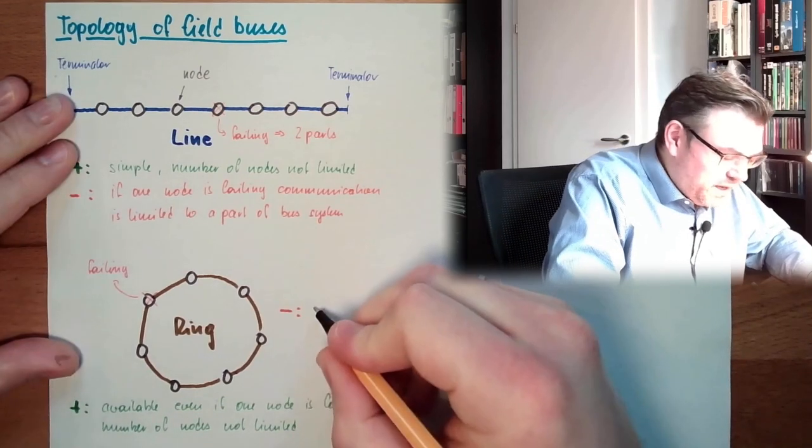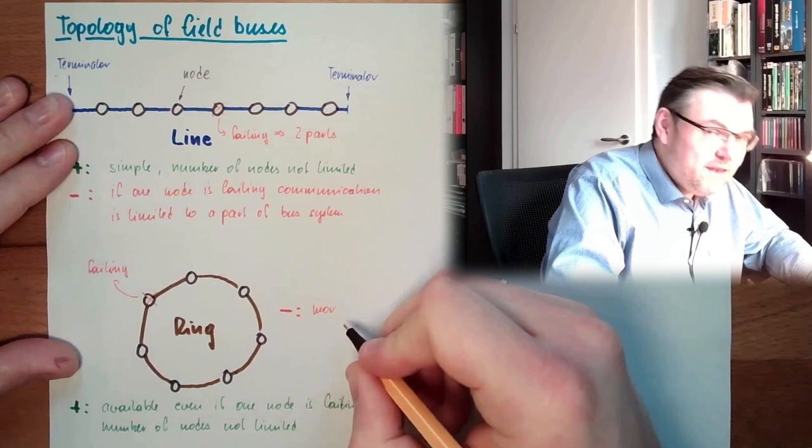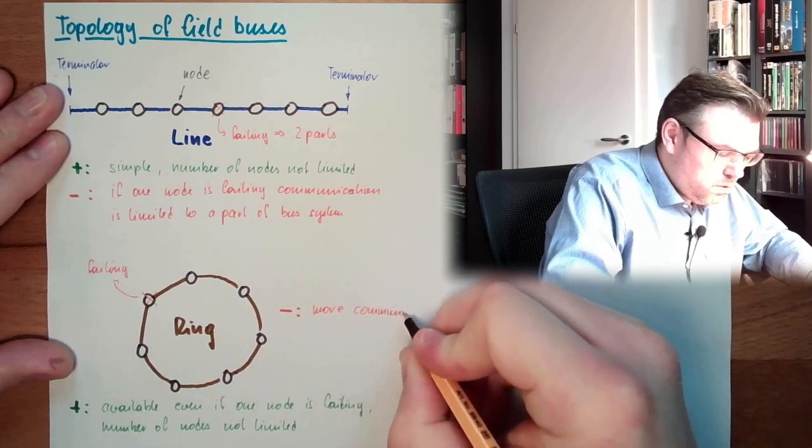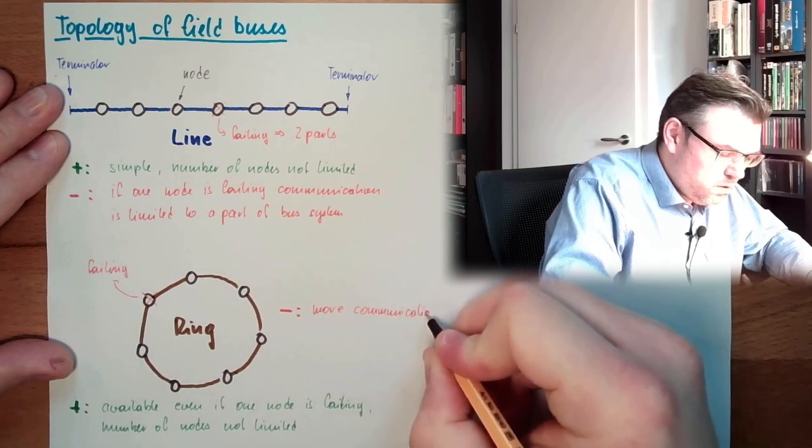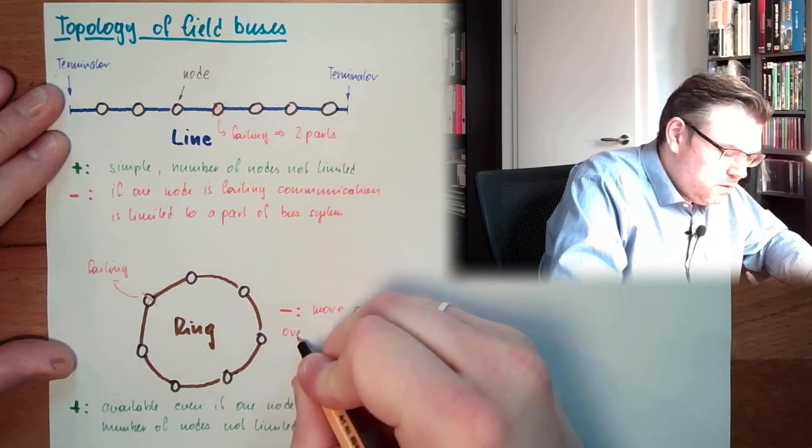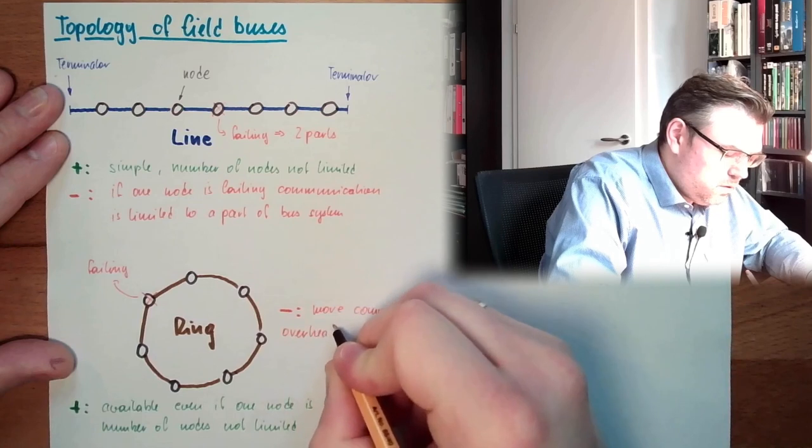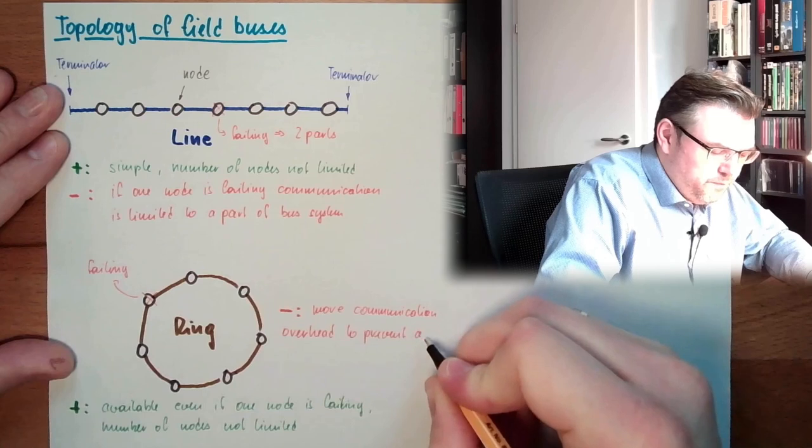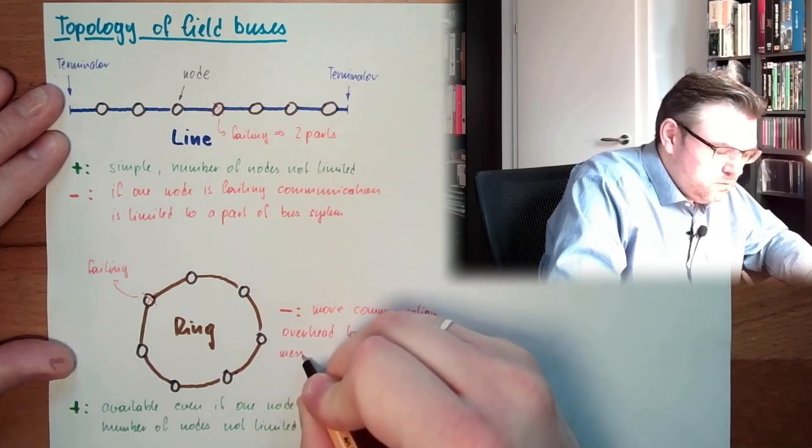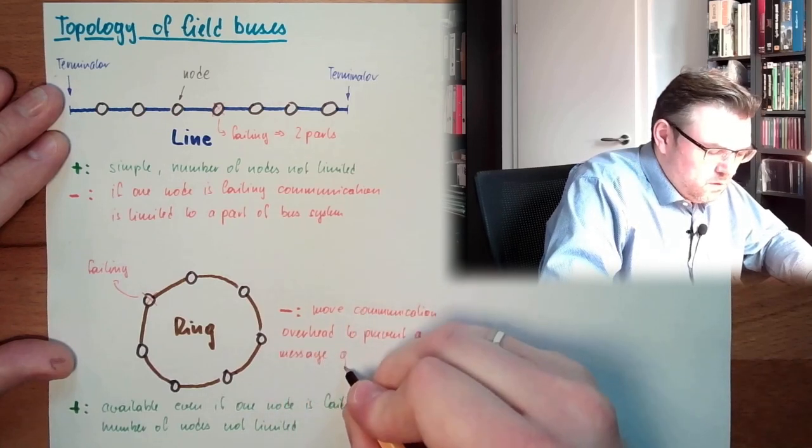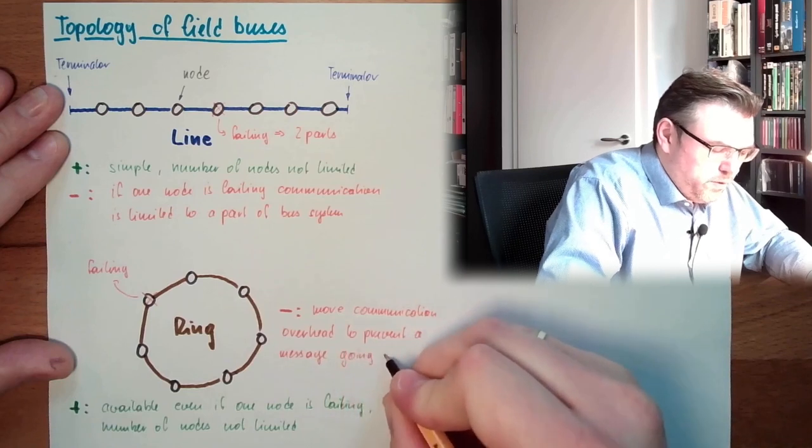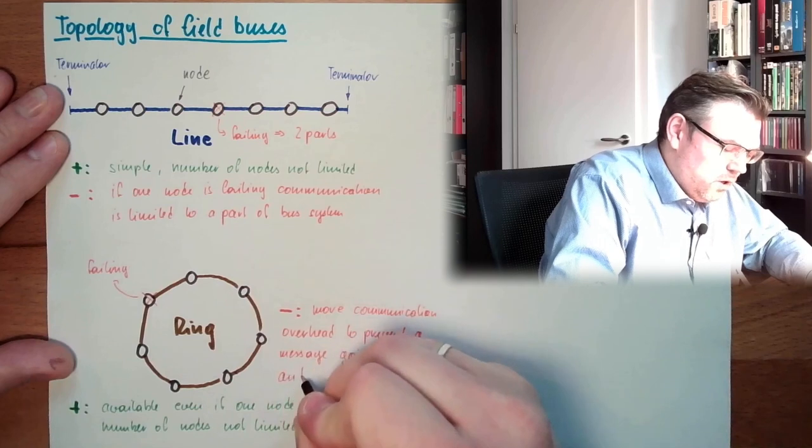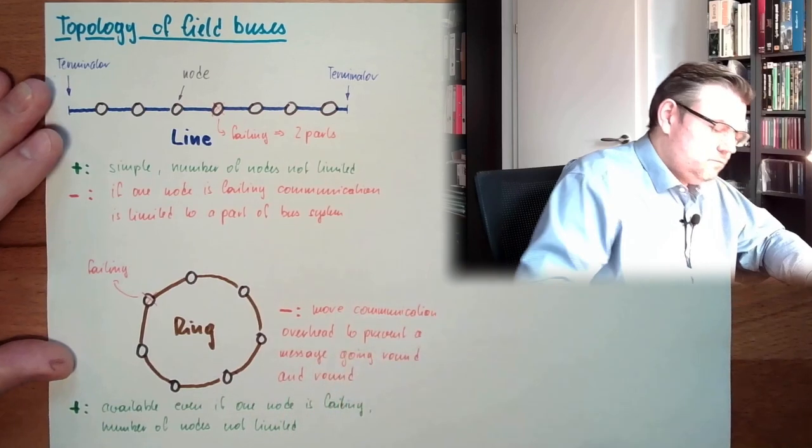So, the ring, there's more communication overhead to prevent a message going round and round. This is how I write it, going round and round. So, this would then block.